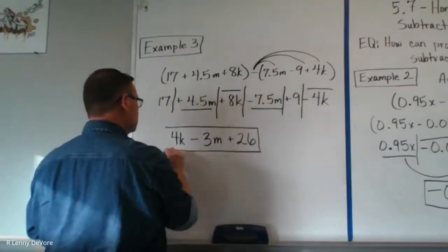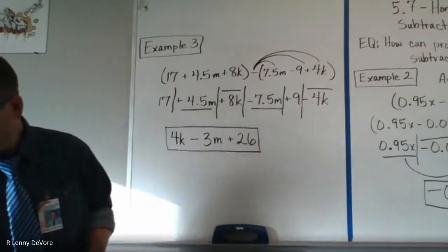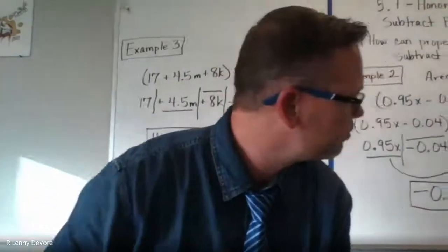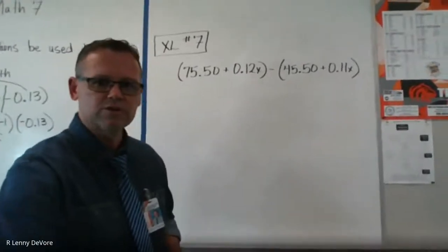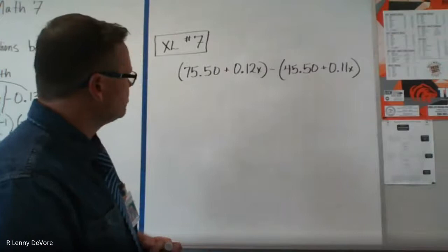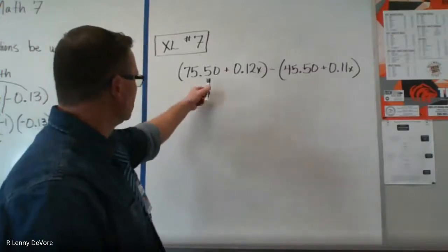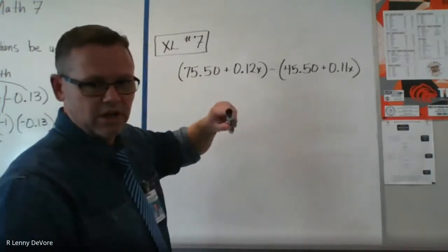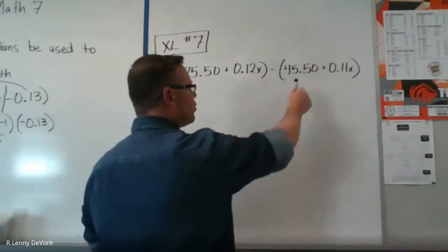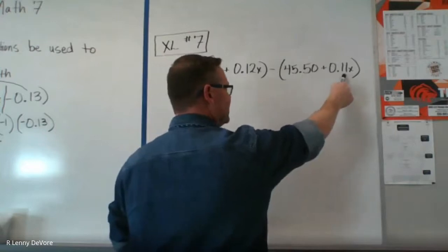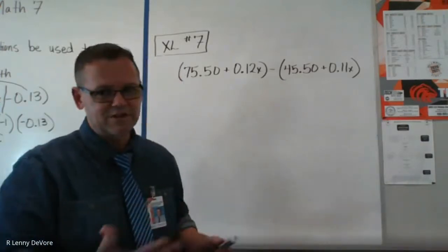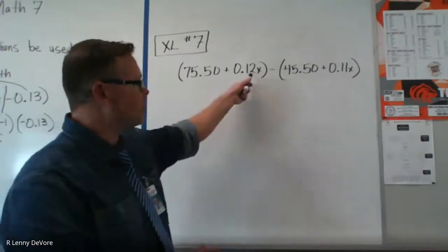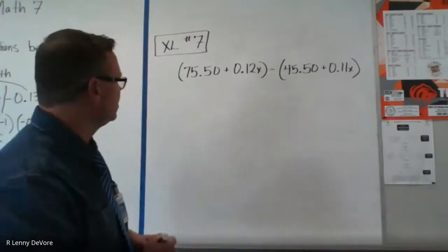Let's look at the last one — this is an XL problem, number seven. I picked this one because there's one little mistake you can easily make. They're talking about $75.50 plus 12 cents per mile, and $45.50 plus 11 cents per mile. If you don't put the cents in decimal form, you'll get it wrong. I actually did it incorrectly — I put 12x instead of 0.12x.